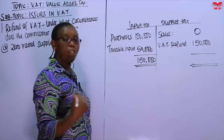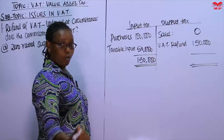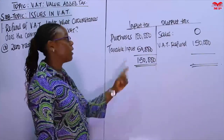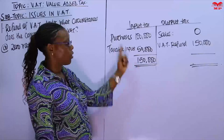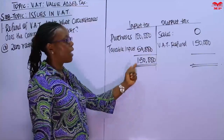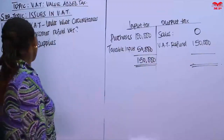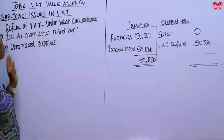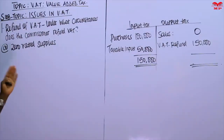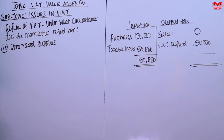The incidence of VAT is not on the business; it is always on the consumer. Since this is what you have already paid, you get it back from KRA. That is how a supplier of zero-rated supplies recovers their VAT from the commissioner.